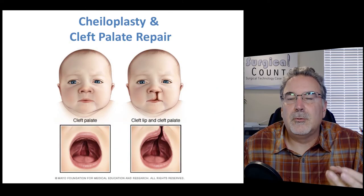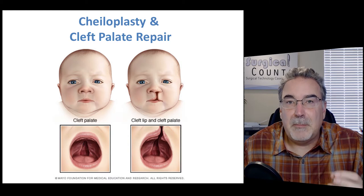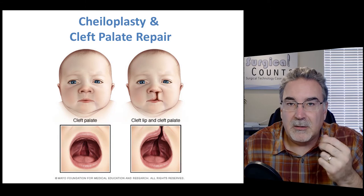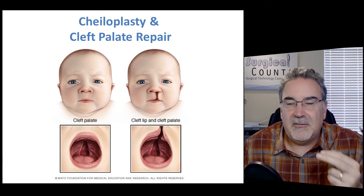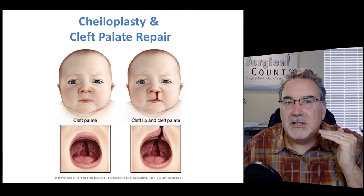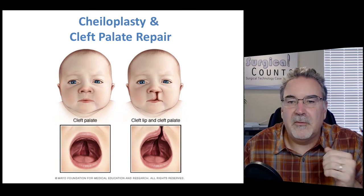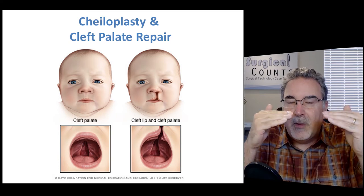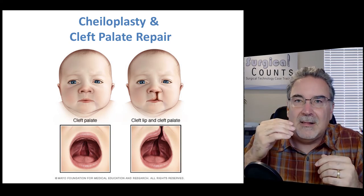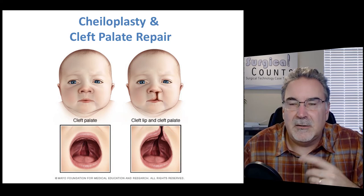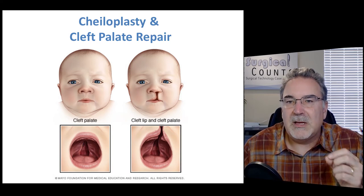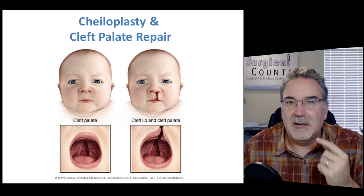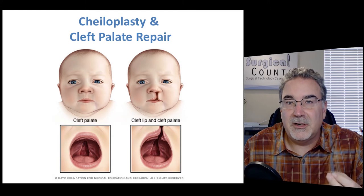Often in children, we do a cheiloplasty and maybe a cleft palate repair. Cheiloplasty is about repairing the lips. The palate is the piece of bone and tissue extending across the roof of the mouth, and sometimes during development those pieces don't come together, forming a break or cleft in the palate — sometimes extending into the front lip as well. So we go in and do a cheiloplasty, repairing the lip, and a cleft palate repair to improve the appearance and functioning of the mouth.